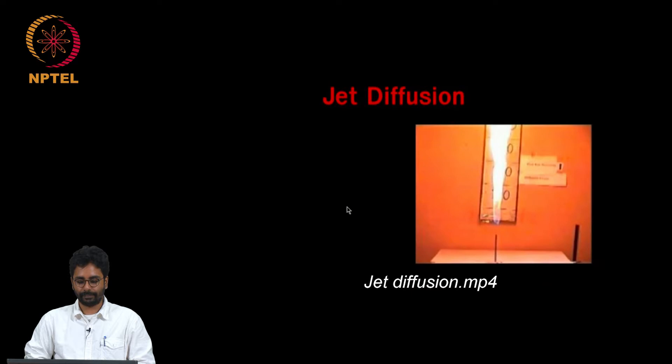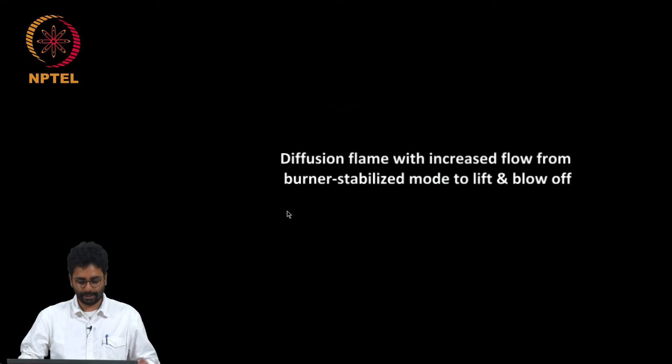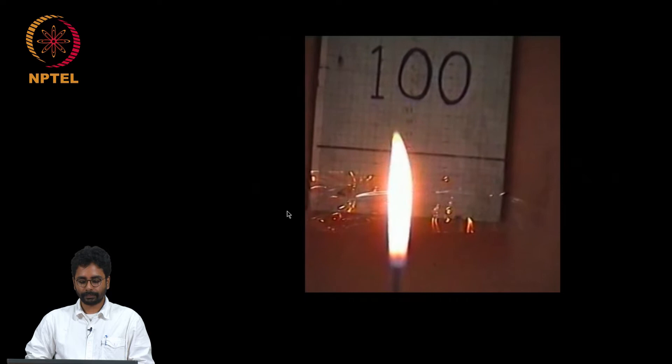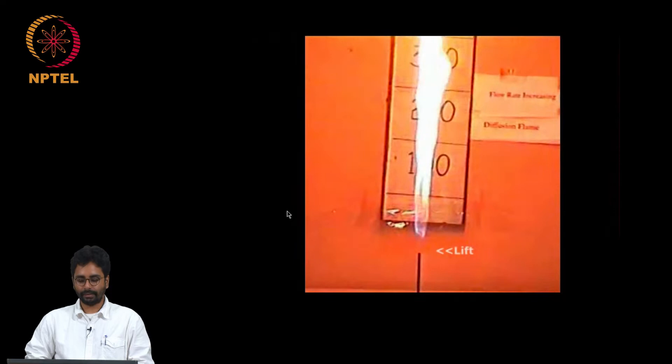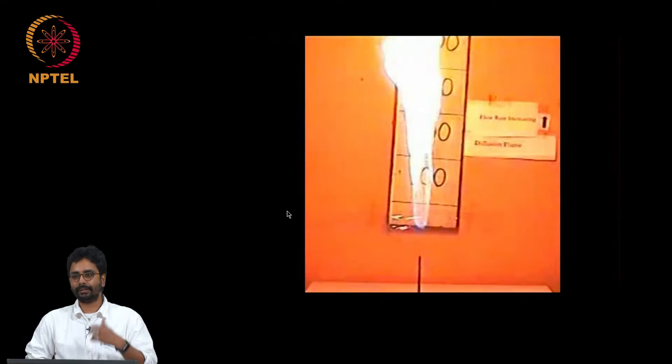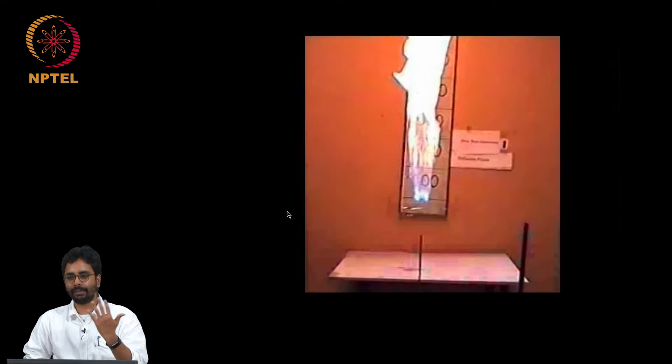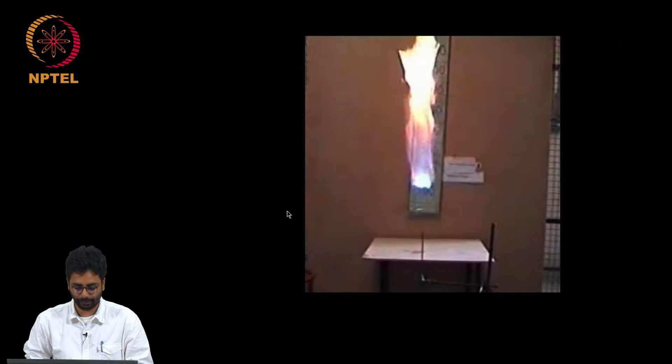Now we will also see blow-off of this flame. You must have seen that it is the tip that becomes turbulent first, and then the disturbances propagate to the base. When the disturbance propagates to the base, the flame lifts off, and you have a lifted flame for a range of Reynolds numbers, and then it blows off.